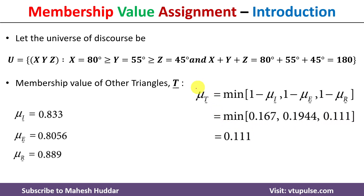So the membership value of other triangles is 0.111 for the given angles. In this video, I have discussed how to calculate the membership value for different triangular shapes using the inference method. I hope the concept is clear.